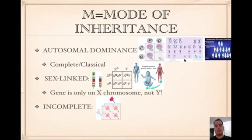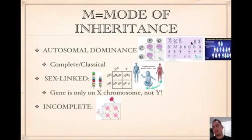Why do they call it autosomal dominance? It just means that the autosomes are chromosomes 1 through 22. The sex chromosomes are the last pair, number 23. Autosomes focus on the homologous chromosomes, which means the trait can equally be found in males and females. That's shown by this diagram — equal chance to appear in males and females.